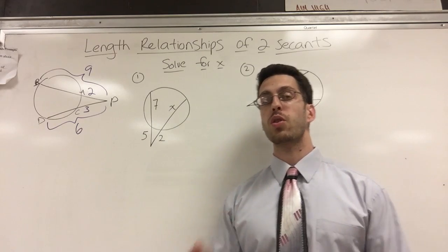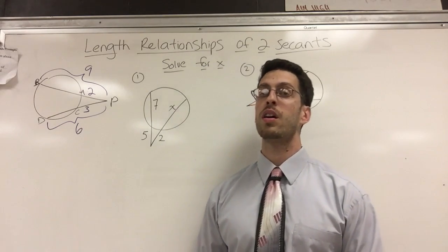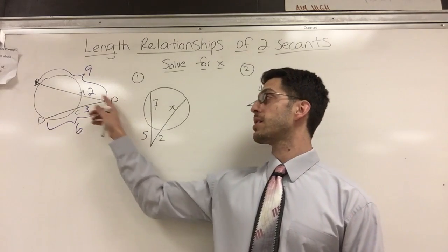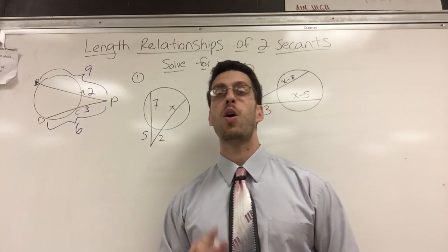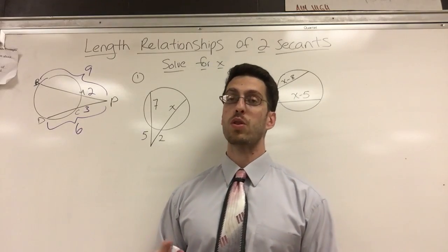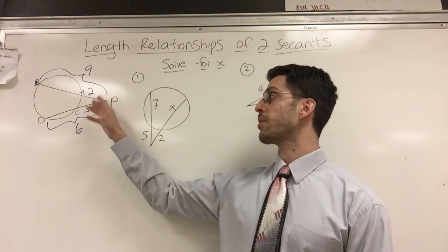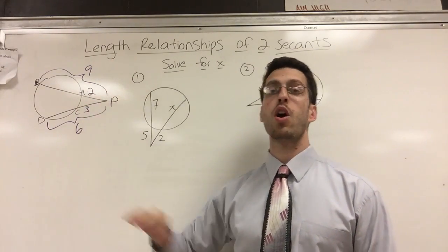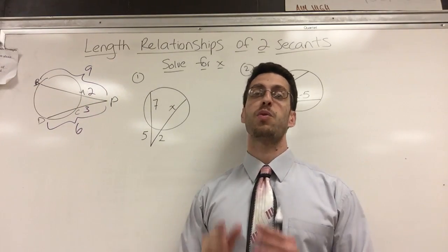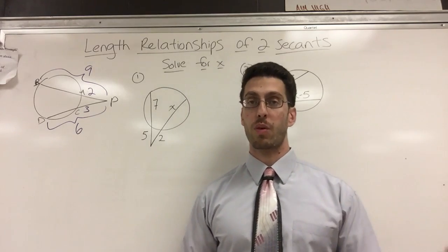So then once you realize what you're looking at, then you can kind of figure out what formula you need to use. Because it's a different formula if you're looking at a secant and a tangent line. Different video, different formula. Also, there's other videos when you're talking about angles. So you might look at the same picture and then instead of lengths, they're talking about angle measure. Another formula. So try to understand what you're looking at before you even start. Because then you got to figure out what formula to use.